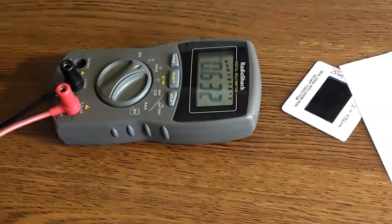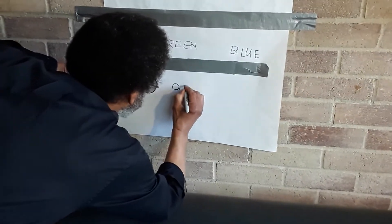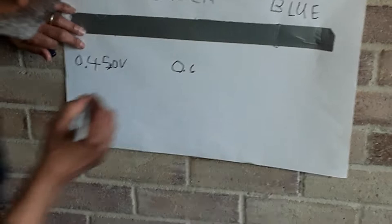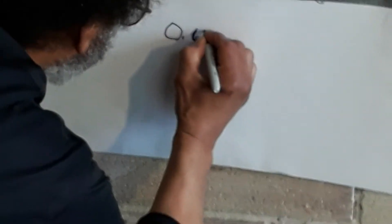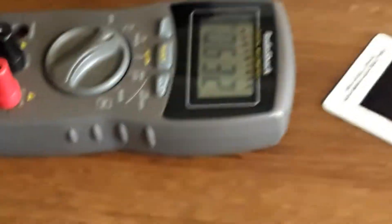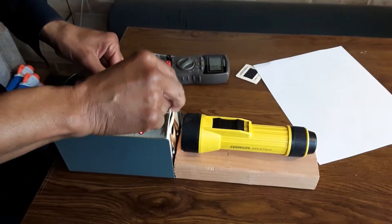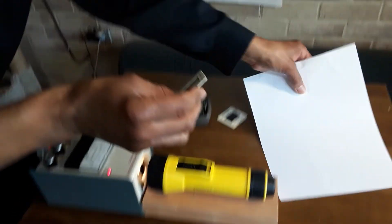For our green filter, the stopping voltage is about 0.632 volts. We're going to write that in — 0.632 volts is the stopping voltage for our green filter. Now we're going to put in our blue filter, so we're going to take this out. As you can see, this is the green filter.